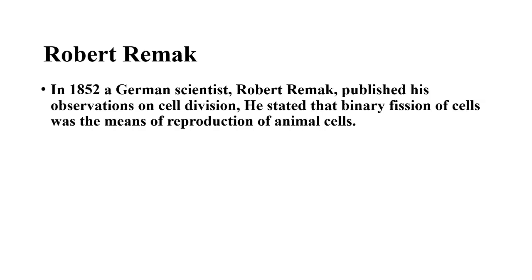The scientist Robert Remak worked in the field of cell division. He first published his observation on cell division in 1852. He stated that binary fission of cells was the means of reproduction of animal cells. Reproduction means producing the same ones — a neem plant can produce only neem plants, a tiger gives birth only to cubs. Cell division is similar to this concept of reproduction.